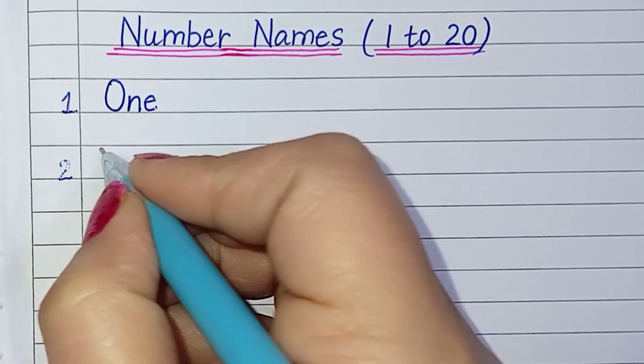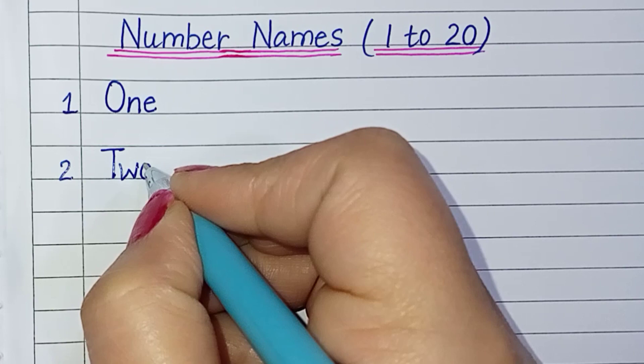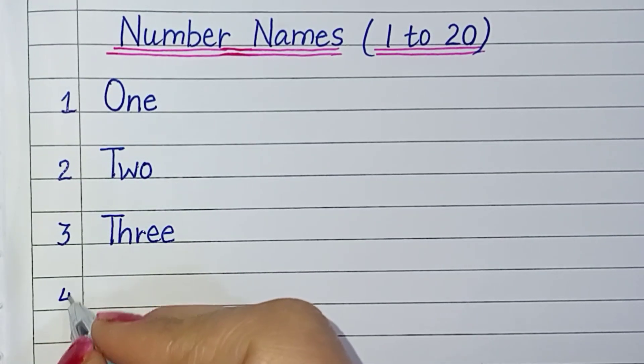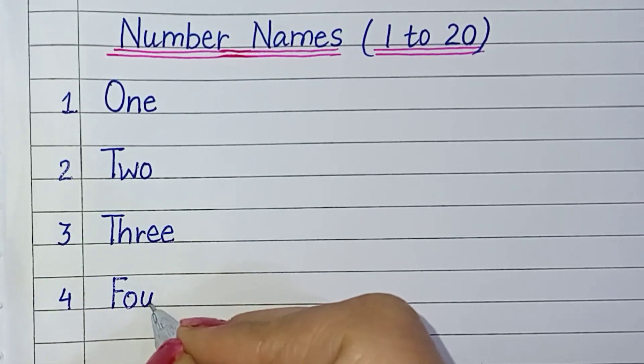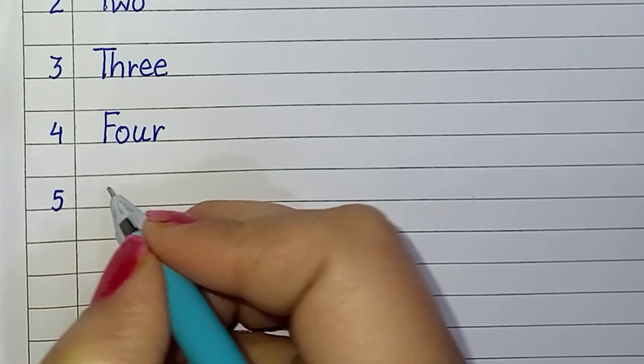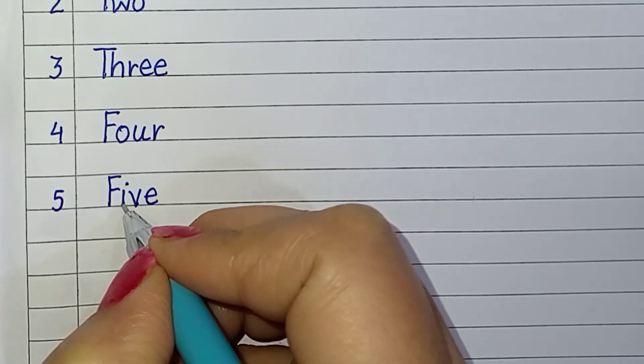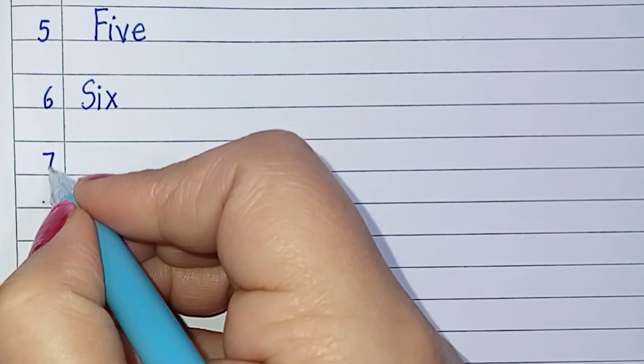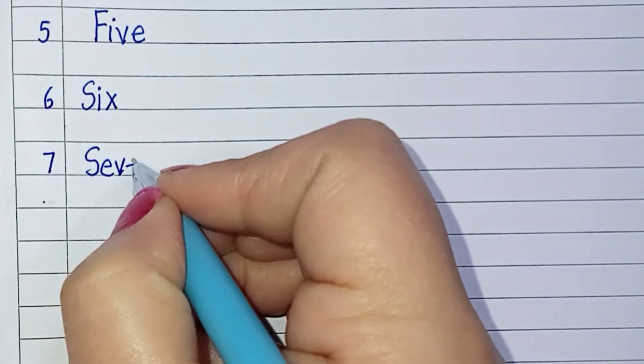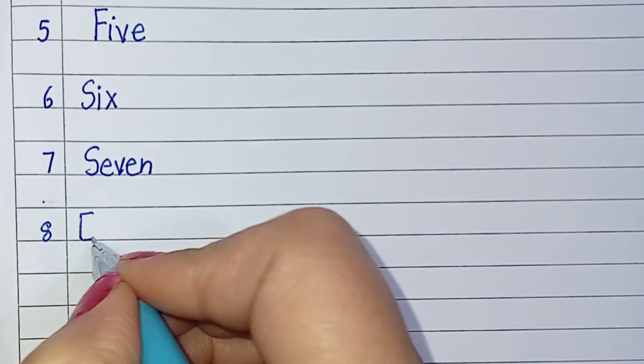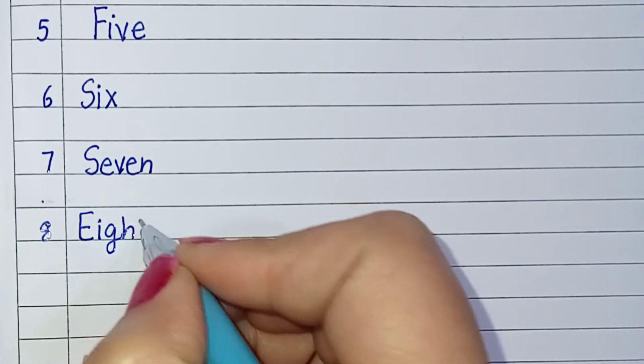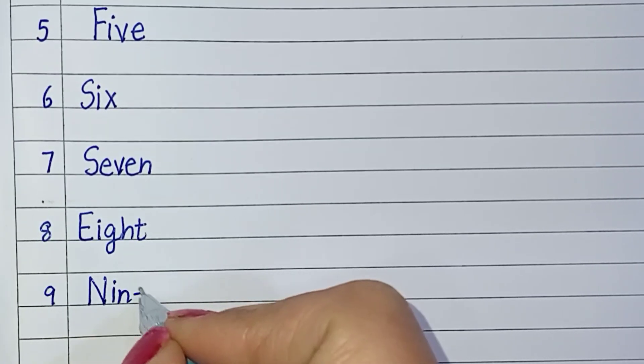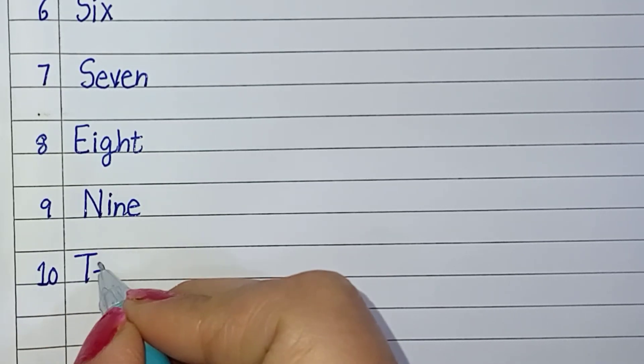1 ONE, 2 TWO, 3 THREE, 4 FOUR, 5 FIVE, 6 SIX, 7 SEVEN, 8 EIGHT, 9 NINE, 10 TEN.